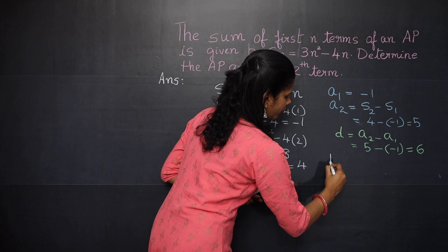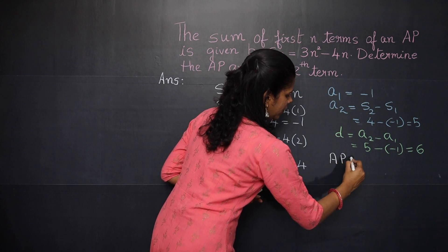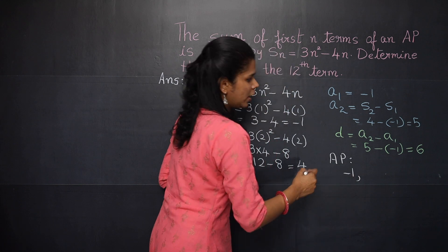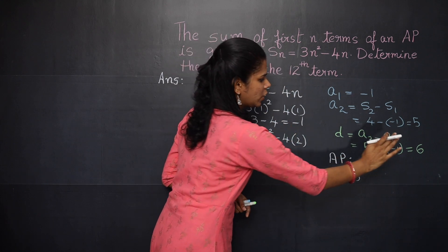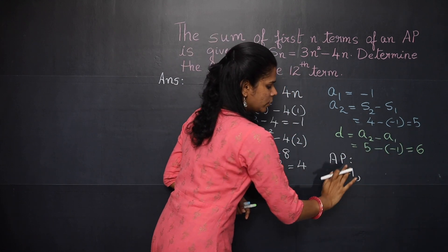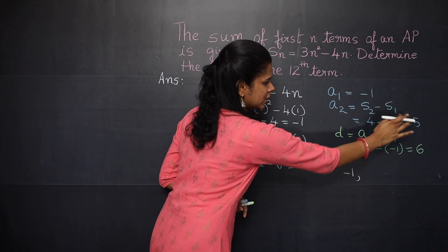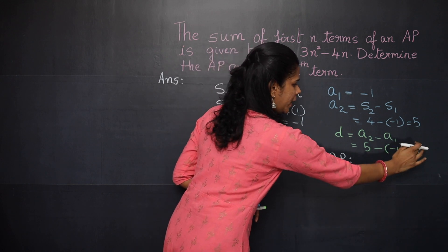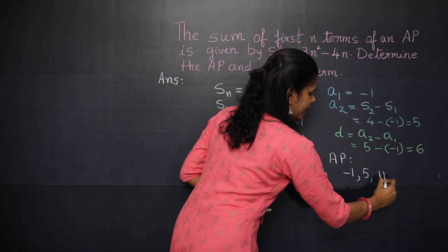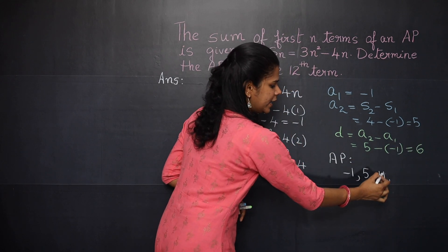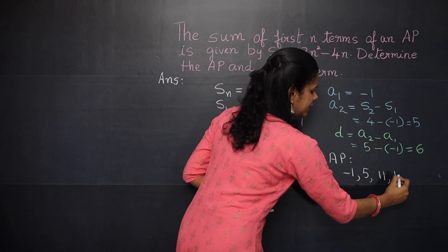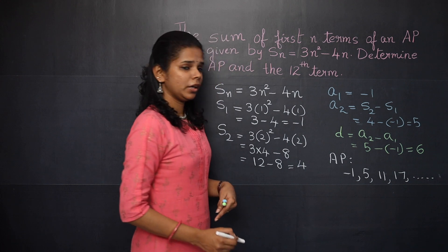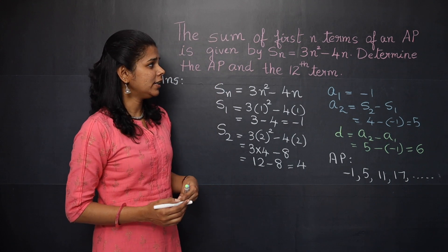Now we can determine the AP. The first term is −1, and with common difference 6 the AP is: −1, 5, 11, 17, and so on.